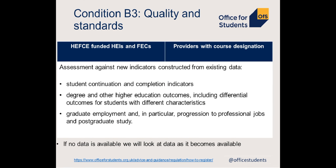For condition B3, all existing providers will be assessed against the same indicators related to student continuation and completion, student outcomes including where outcomes differ for different groups, and graduate employment and progression. The indicators will be constructed from existing data sets, so no new data submissions are required. We are seeking evidence of a minimum baseline, so we will consider absolute performance over time rather than performance against a benchmark, though we will consider provider context in our judgement where appropriate.